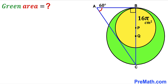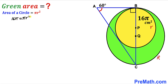Let me label the radius of the smaller yellow circle as lowercase r and the radius of the larger circle as uppercase R. Recalling the area formula, Area = πr², and since the area of the yellow circle is 16π, we get 16π = πr². Dividing both sides by π gives r² = 16, so taking the square root, the radius r equals 4 centimeters.